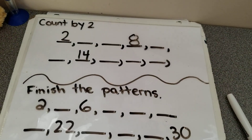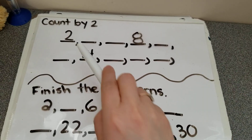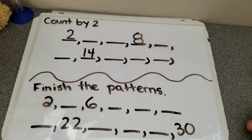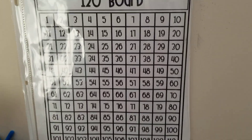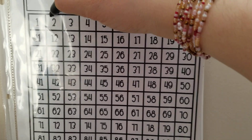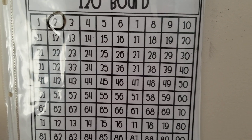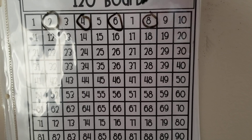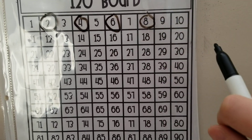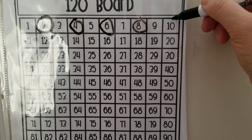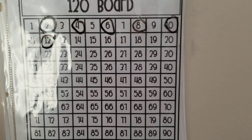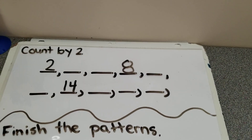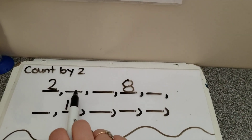This one here is skip counting by twos. So we have two and then a blank, blank, eight. When we're gonna skip count by twos, we're gonna look at our 120 board. Let's circle the number two because we're skip counting by twos and we're gonna go one, two, one, two — each time we're gonna skip that one. So each time we write two because we're skip counting by twos. So two was the next number when we skip counted.